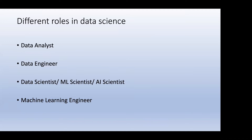There are career progression levels within each role — from data engineer to senior, lead, and staff data engineer, and then managerial roles. Similarly for data scientists: senior, staff, principal data scientist, director of data science, VP of data science, and so on. Note that role titles are not unified across industries — someone called a data scientist at one company might be doing data engineering work. It depends more on what skills you have rather than the title.